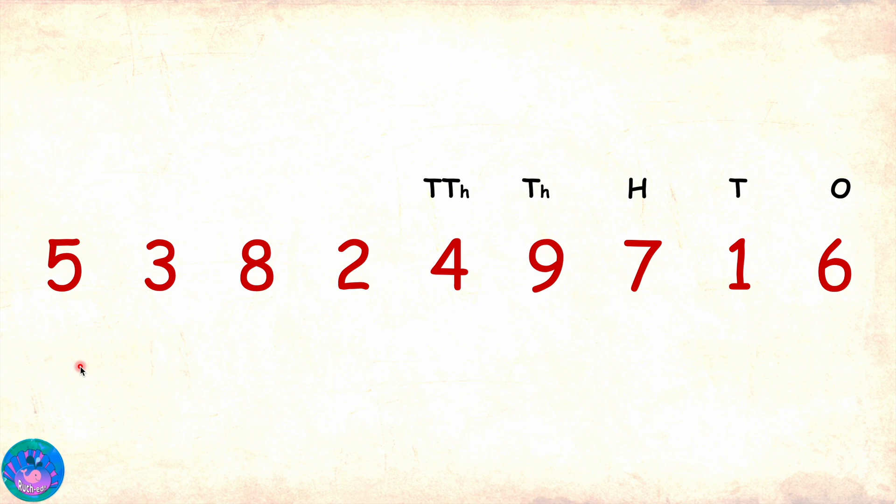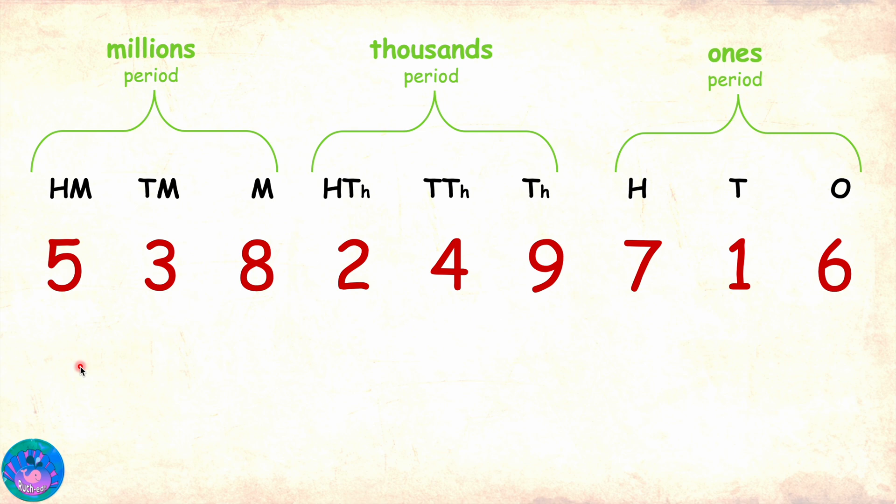In the international system, we next have hundred thousand, generally abbreviated as HTH, then million, generally abbreviated as M, then ten million, abbreviated as TM, and hundred million, abbreviated as HM. We have ones, tens, and hundreds forming the first period, the ones period. Now remember, in international system, every period is of three digits. So, we have the thousands period formed by thousand, ten thousands, and hundred thousands, and the millions period formed by million, ten million, and hundred million digits.